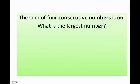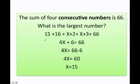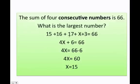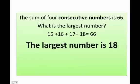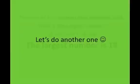x equals 15 is the smallest number, but the question asks for the largest. Substituting x into all four numbers: x equals 15, the next is 16, then 17, and the largest number is 18. Therefore, the answer is 18. Super easy — let's do another one.